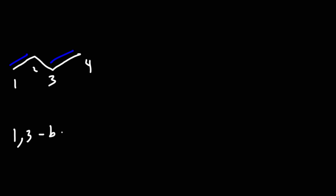Let's start with this common diene called 1,3-butadiene. If we count the number of carbons, we have a total of four carbons — think of butane. We have a double bond on carbon 1 and 3, so it's called 1,3-butadiene. Now we're going to react this diene with hydrobromic acid, HBr.